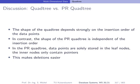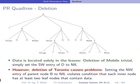The shape of the PR quadtree does not depend on the insertion order, unlike the regular quadtree. Inner nodes store only pointers — no data information. This characteristic makes deletions easier in the PR quadtree compared to the difficult deletions in the regular quadtree. Data is located only at the leaf nodes.